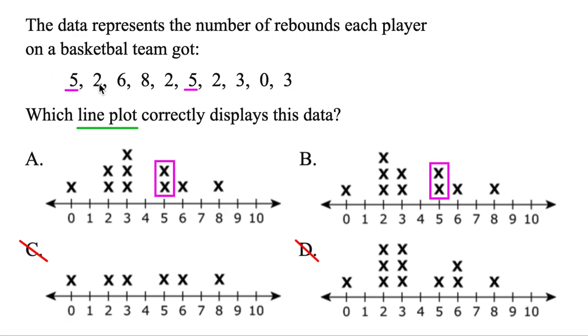Okay, next, how many players got two rebounds? One, two, three of them. So we want to see three X's above two. But A, that only has two X's there, that's no good.